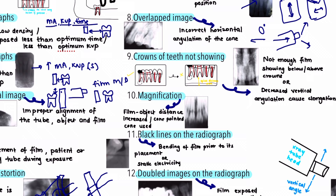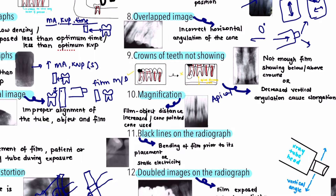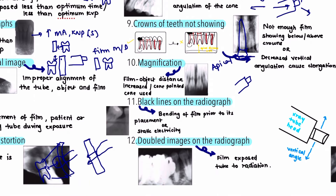The next error is when the crowns of the teeth are not seen. Similar to when the apical end gets cut off, the crowns can get cut off if the tooth length is large or if the vertical angulation decreases, leading to elongation of the teeth beyond normal size, causing the crown to get cut off. Using a proper film size is necessary.